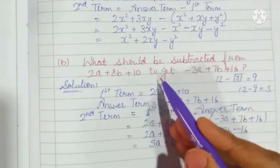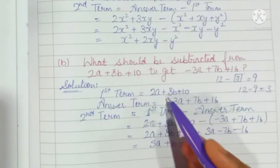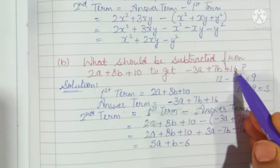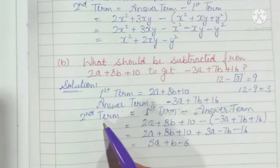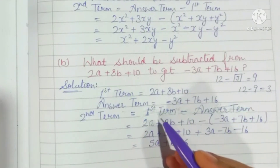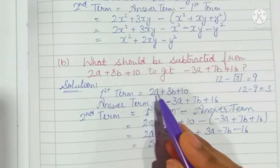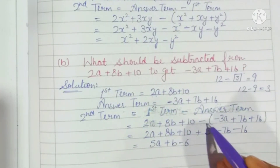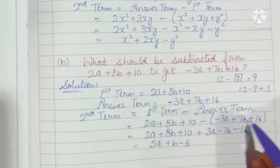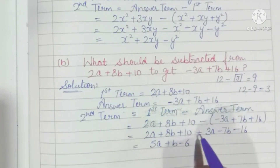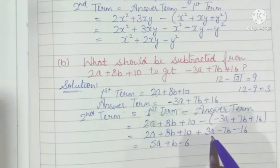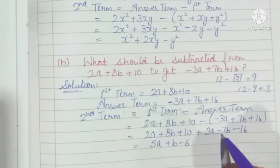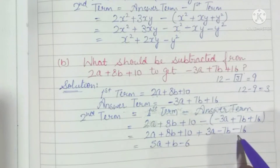Same as here, consider 2a plus 8b plus 10 as the first term, and the answer term is minus 3a plus 7b plus 16. To find the required expression, we subtract: 2a plus 8b plus 10 minus (minus 3a plus 7b plus 16). Change the sign: plus 3a, minus 7b, minus 16.